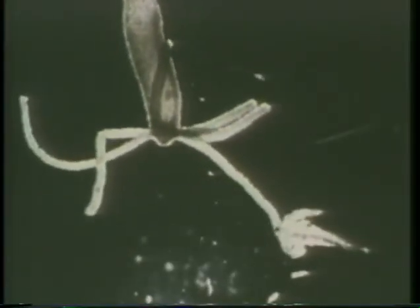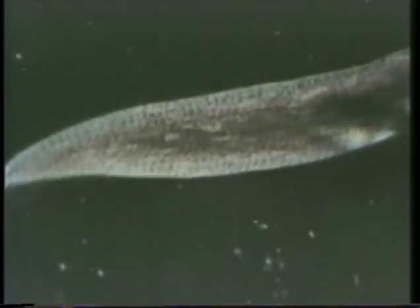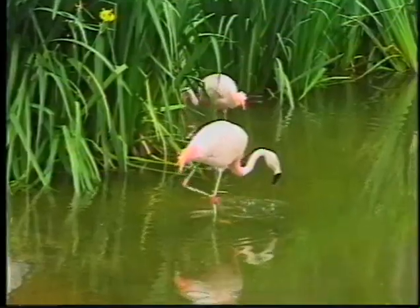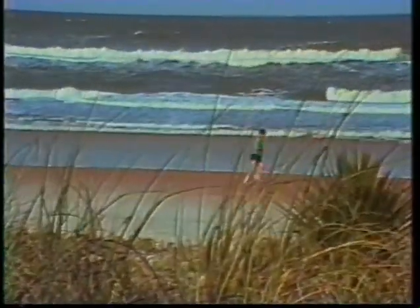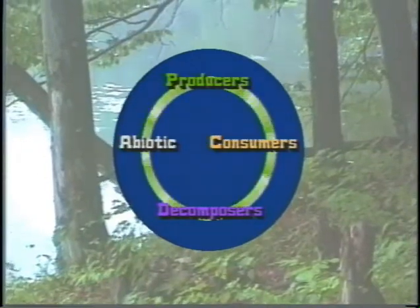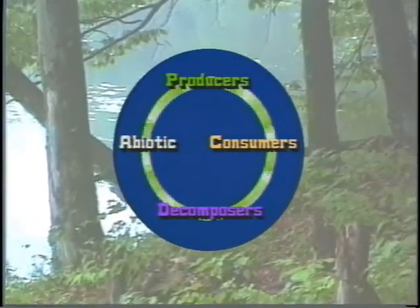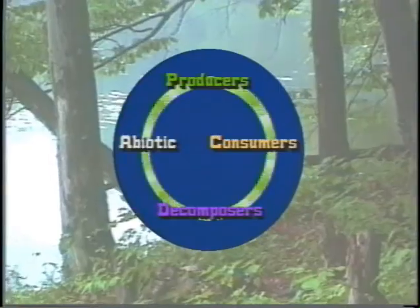Now these plant-produced chemicals are then used by the consumer animals to make still more chemicals — chemicals just as complex and even more incredibly organized together to make the functioning hawk, mink, frog, and human being. These chemicals are then broken apart again and recycled back into the abiotic from which they came. This recycling is the job of the decomposers in every ecosystem.